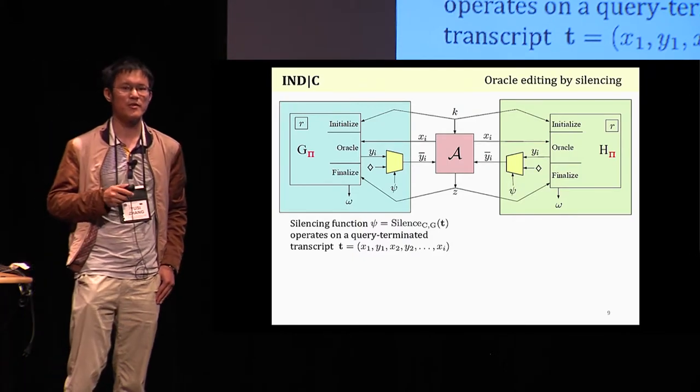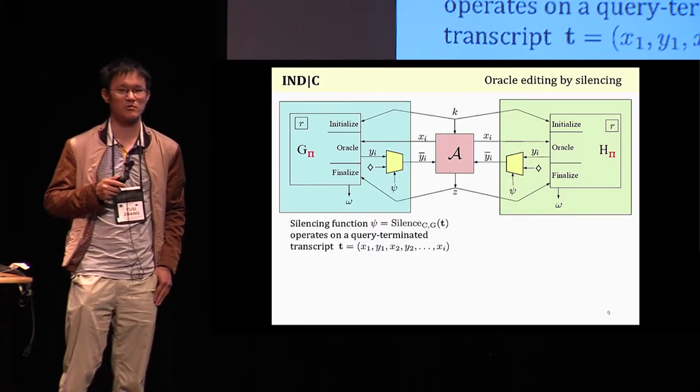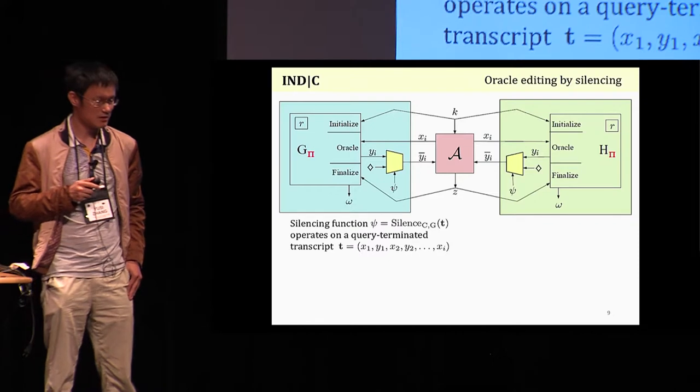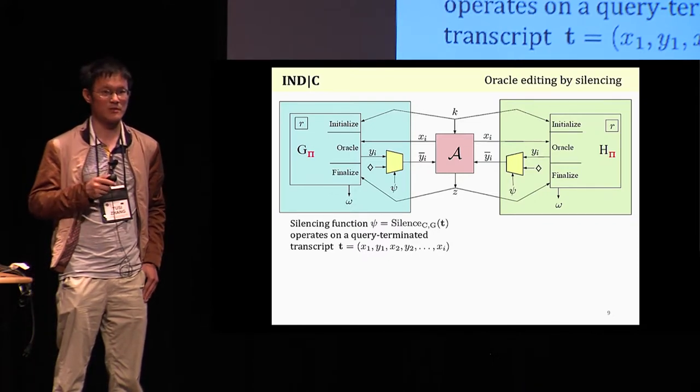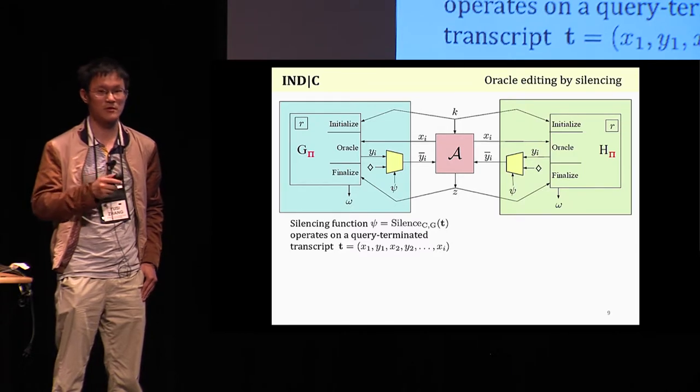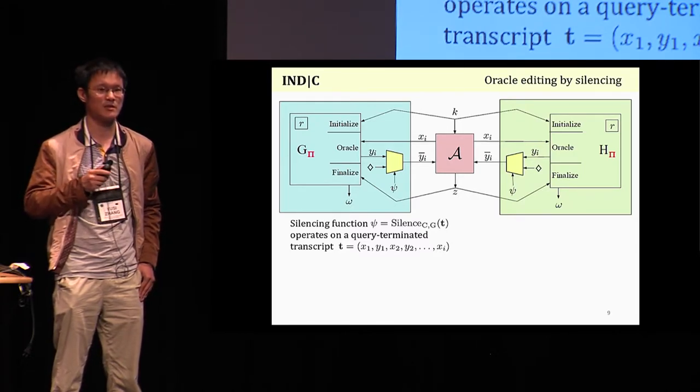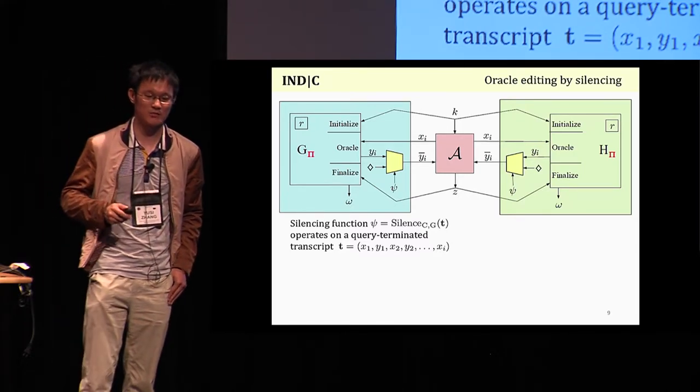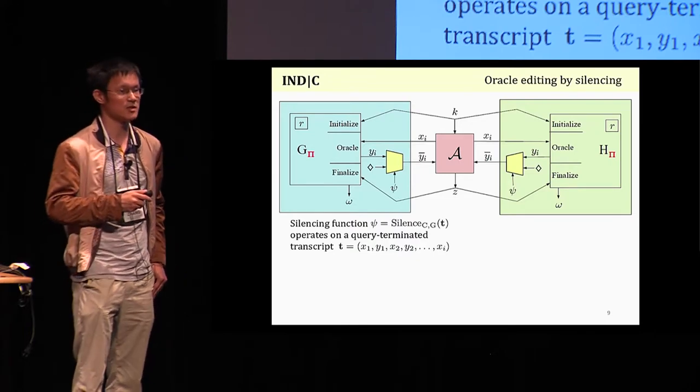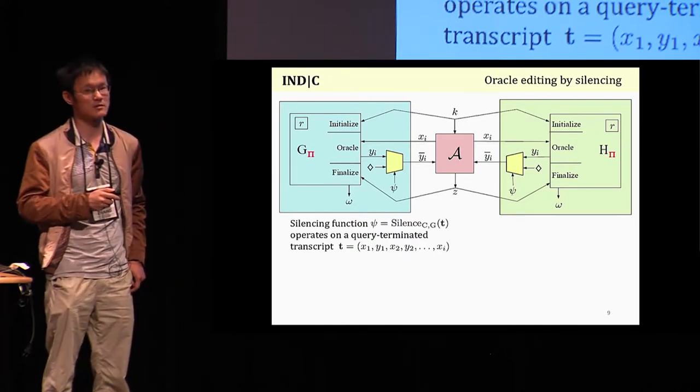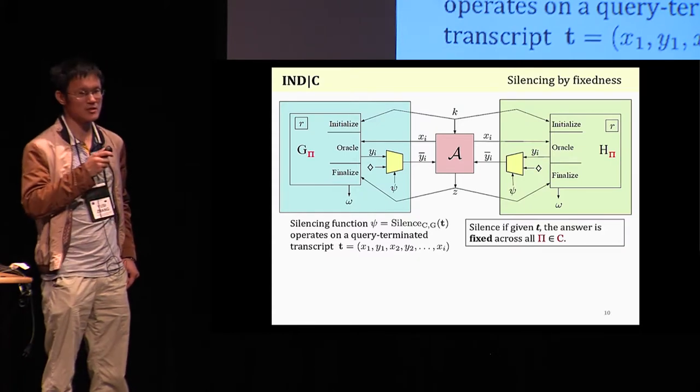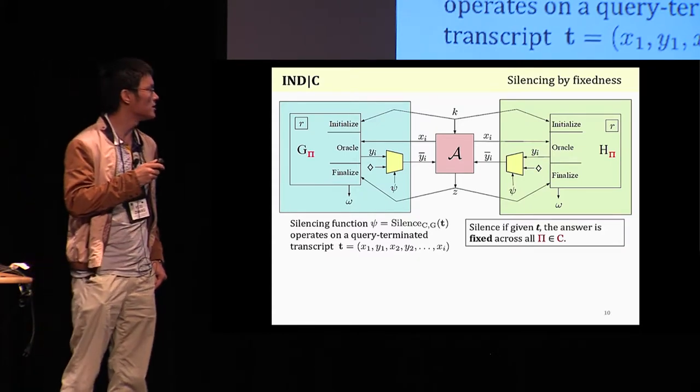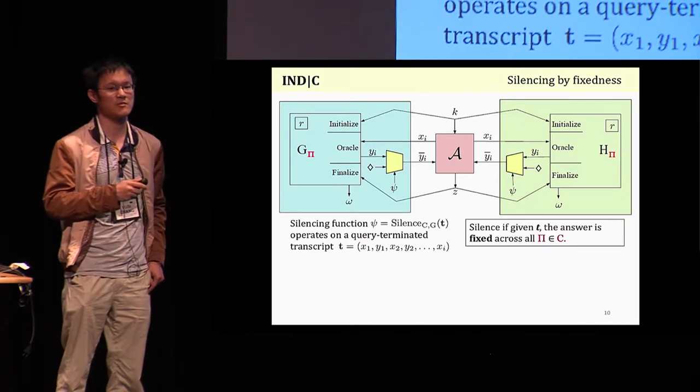We think a query is trivial, so it should be silenced, when an adversary based solely on the current transcript that includes all his queries and responses at this point and based solely on the fact that the scheme is in the correctness class, knows the answer beforehand. Formalizing this idea, we define the silencing function in this way, that given T, the answer is fixed across all schemes pi in the class C, if the adversary interacted with the real game.